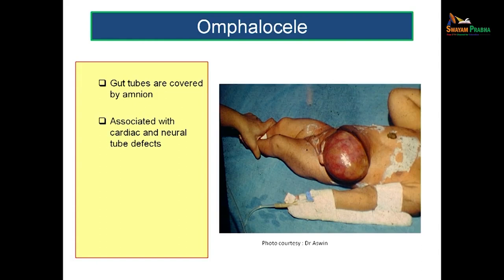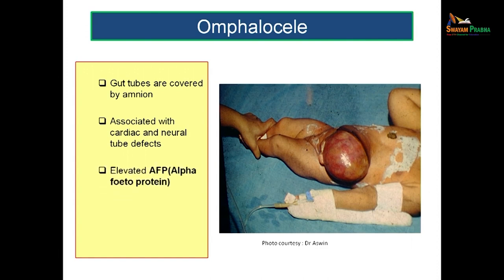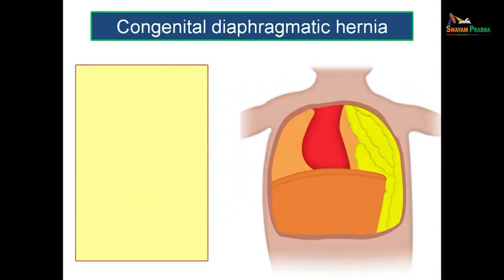The opening case — omphalocele — is different: here you are not able to visualize the gut tubes because they are covered by a membrane, which is the amnion. The gut tubes lie outside the abdominal cavity but are covered by the amnion. This condition is usually associated with cardiac and neural tube defects, elevated alpha-fetoprotein levels, and chromosomal abnormalities.